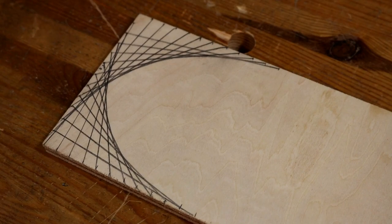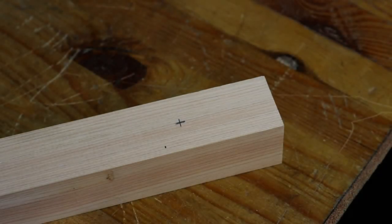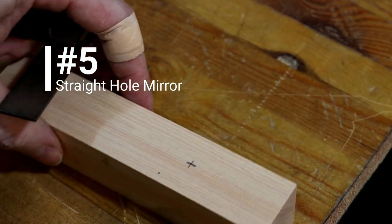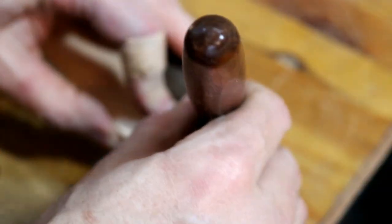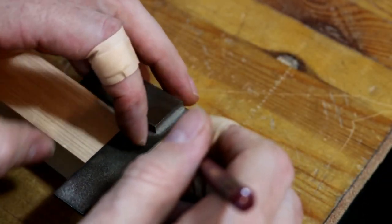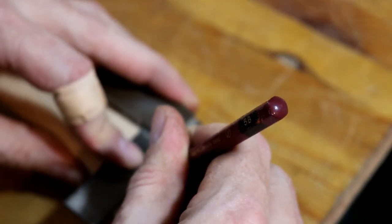When you're drilling holes freehand with a bit and brace or a power drill, it's really hard to get those holes perfectly perpendicular. What I like to do is draw a line on the adjacent face of the side where I'll be putting the hole in.